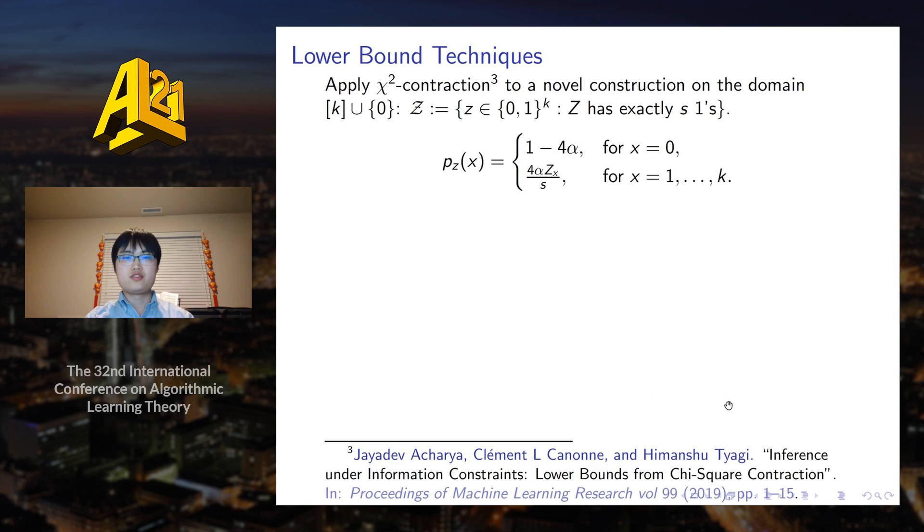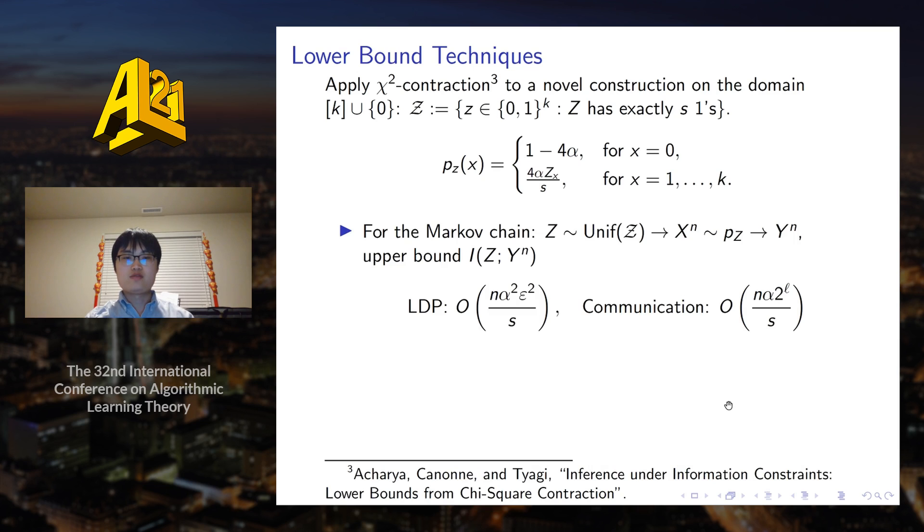Finally, I will introduce the lower bound techniques. We basically applied the chi-square contraction method to a new construction of family of distributions. These distributions are concentrated on one symbol with the remaining probability mass evenly distributed over a set of size S. We parameterize this family by the sets of all vectors, binary vectors of length k that have exactly S ones. To obtain the lower bound, we form a Markov chain. We draw z uniformly at random from the calligraphic Z. From this, we obtain n samples from p of z.